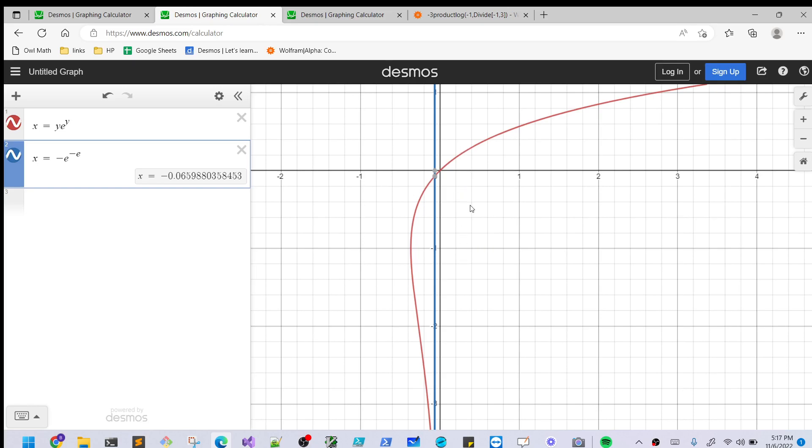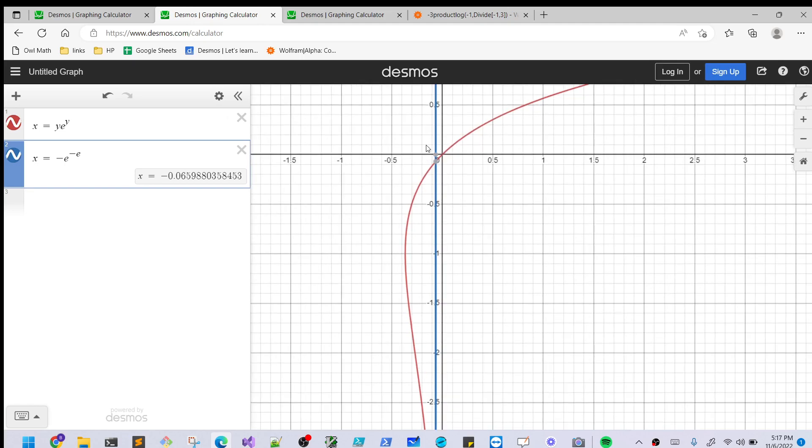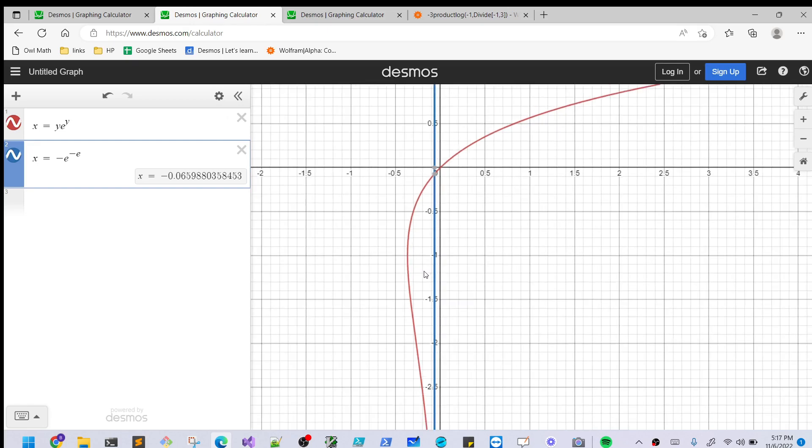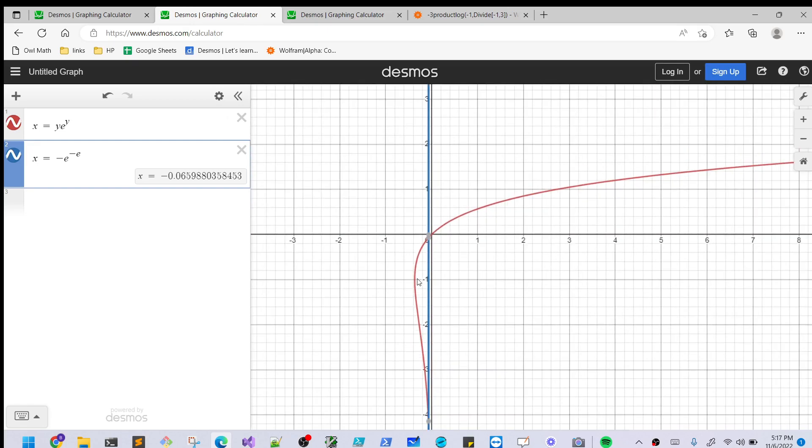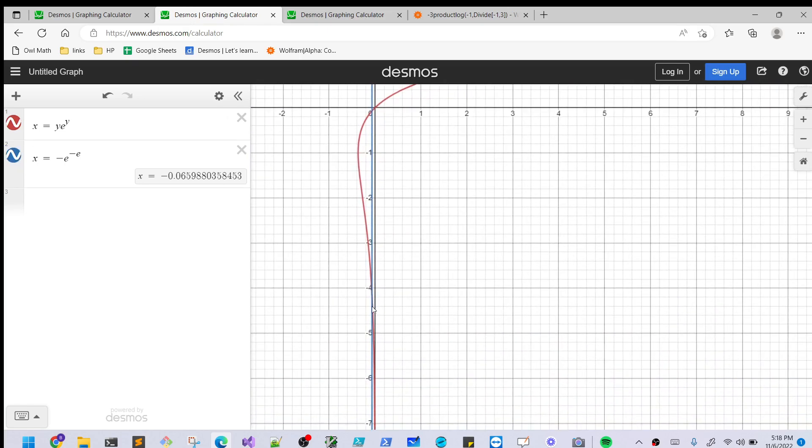And what you can see is in this region here, if we zoom out, we have our first solution, which we got from this, we got our principal answer that I showed on the previous screen, but there's actually another intersection point here, because you can see this is going to loop around, so this is going to intersect again way down here somewhere.